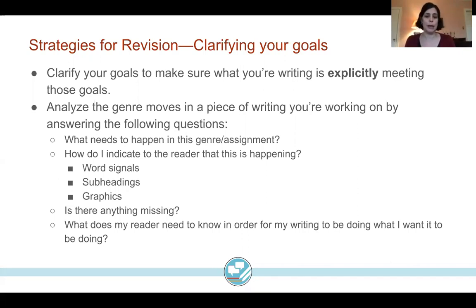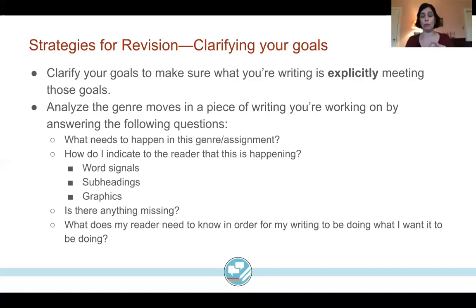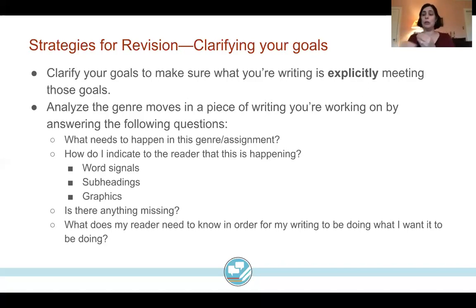One way to do this is by analyzing the genre moves in your piece — what needs to happen in this assignment or genre, and how do you indicate to the reader that that is happening? You can do this through signal phrases, strong topic sentences, signposts, subheadings — a lot of fields do that through graphics as well. Ask yourself: is there anything missing? What does my reader need to know in order for my writing to do what it's supposed to do? Is there a step in the logic missing somewhere?